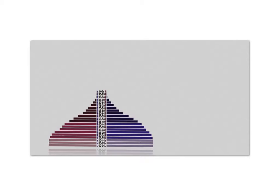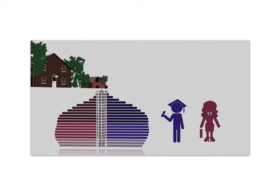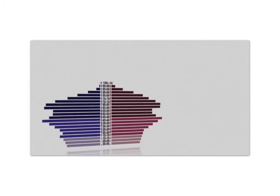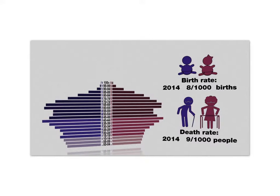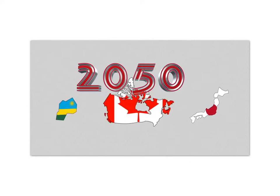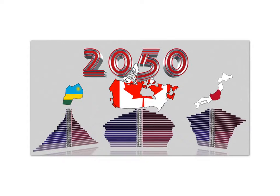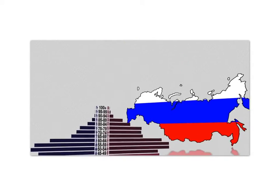Developing countries further along in industrialization begin to see a fall in birth rates due to factors such as increased education and opportunities for women outside of child-rearing, and a move from rural to urban living that makes large families less economically advantageous. Countries in advanced stages of industrialization reach a point where both birth and death rates are low and the population remains stable or declines. Looking at projected population pyramids for the same three countries in 2050 — a population pyramid can be useful not only as a predictor of a country's future, but as a record of its past.